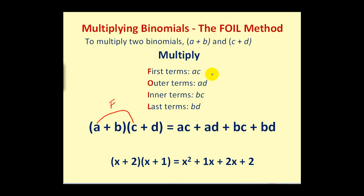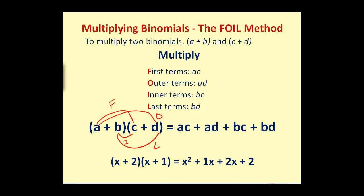Next it would be the outer terms, or A times D — the leftmost term and the rightmost term, so they call it the outer terms. The next product would be the inner terms, so B times C. And the last terms, B times D, would be the last terms in each binomial factor. I'm not a real big fan of this acronym because as long as you can remember to multiply each term in the first times each term in the second, that'll apply whether we're multiplying binomials, trinomials, and so on. But the FOIL method only works for two binomials, so if you like it, you can use it — but remember, it only applies to multiplying two binomials together.